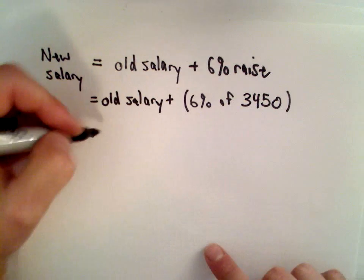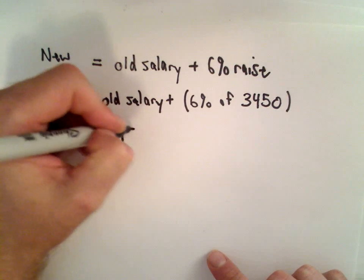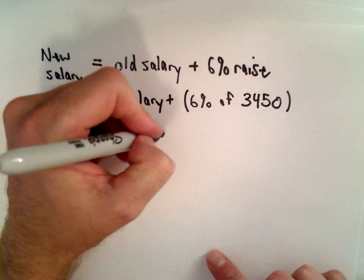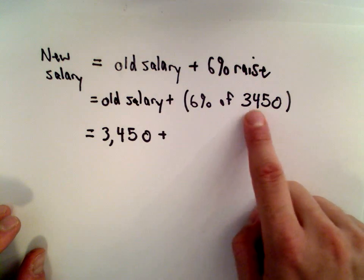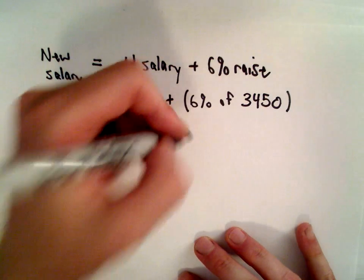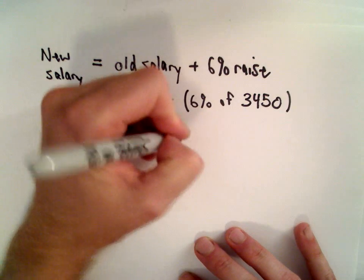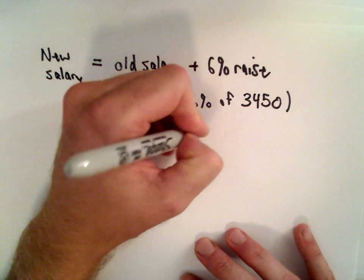We know her old salary was given to us as $3,450. And to figure out 6% of $3,450, well 6% I can write that as a decimal by writing 0.06.